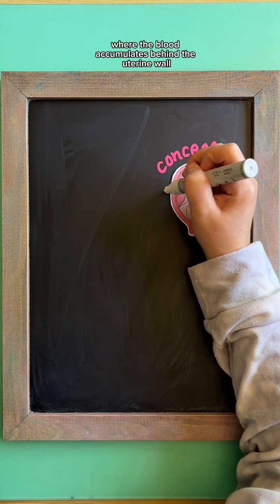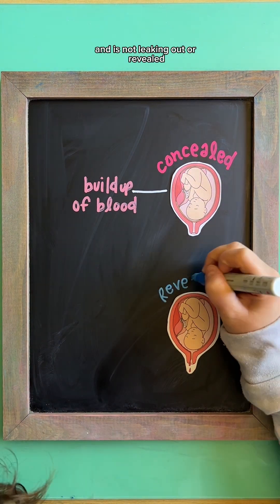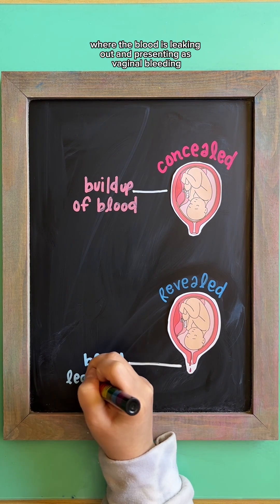This can present as concealed, where the blood accumulates behind the uterine wall and is not leaking out, or revealed, where the blood is leaking out and presenting as vaginal bleeding.